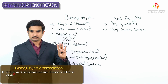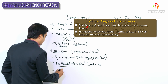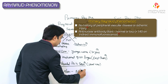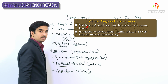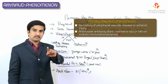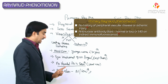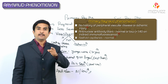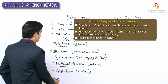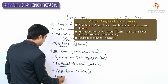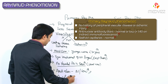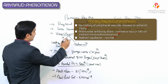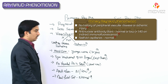Patients with primary Raynaud's phenomena do not have a history of peripheral vascular disease or ischemic injury. Anti-nuclear antibody (ANA) titers are normal or low — that is, less than 1:40 on indirect immunofluorescence. This is an important MCQ point. Nail fold capillaries are also normal in primary Raynaud's phenomena.